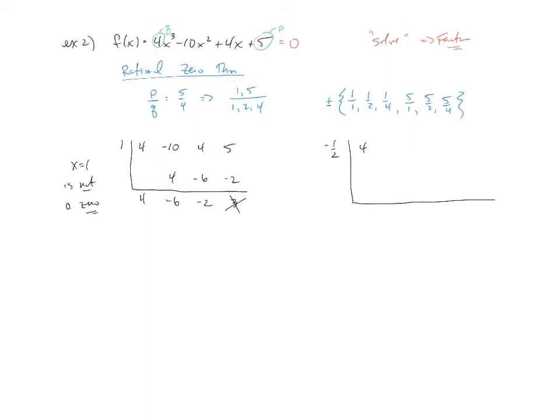So if I take my 4, my negative 10, 4, and 5, bringing down the 4. Negative 1 half times 4 would give us a negative 2. We add, we multiply, we add, we multiply, and you can see now, with a remainder of 0, that tells us that x equals negative 1 half is a zero of the polynomial.